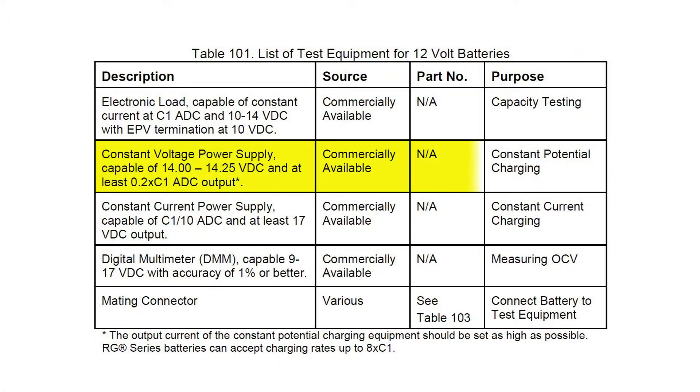The charging equipment for a constant potential charge must meet the requirements given in Tables 101 or 102 of the CMM. Table 101 is for 12-volt batteries and Table 102 is for 24-volt batteries. As seen in Table 101, the charge voltage must be 14.0 to 14.25 volts and the output current must be at least 0.2, or 20%, times the C1 rating of the battery.